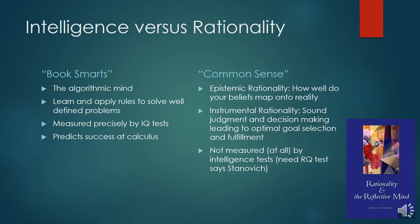I'd like to make a distinction between intelligence versus rationality, or better yet, book smarts versus common sense — a distinction which I finally found explicated in the book 'Rationality and the Reflective Mind' by cognitive psychologist Keith Stanovich. Book smarts is a product of the algorithmic mind, or the ability of the mind to act like a computer, developed through rote memorization of algorithms which are learned and applied to problems identified through pattern recognition. It is measured very precisely by IQ tests and predicts success in calculus.